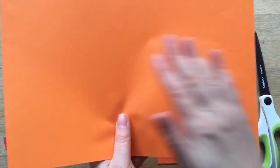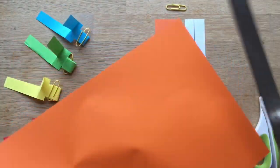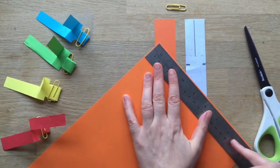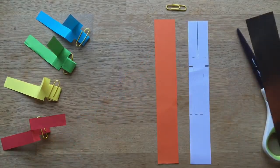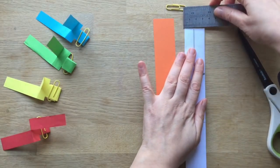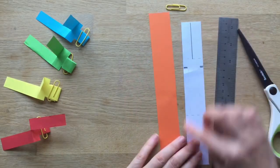What you need is a piece of paper like this orange one. I've already cut a strip off, and it really doesn't matter, it's not that accurate. I just use the width of my ruler and cut it across, and in my case that is three centimeters across.